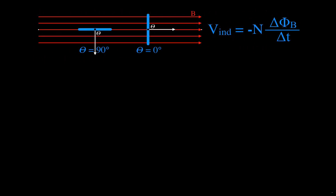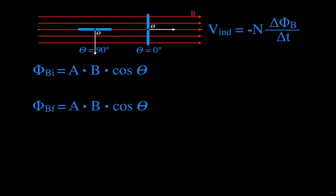It's useful to draw a picture here. The coil starts parallel to the magnetic field, then it's rotated so that it is perpendicular to the magnetic field. We know there are 100 windings and the time is 0.2 seconds, but we have to calculate the change in flux. I'll go through this in detail so you can see how this works when we rotate the coil.